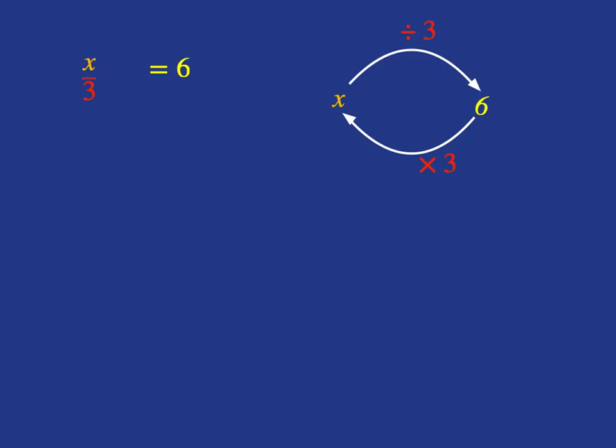What we do to one side of the equation, we must do to the other, so let's multiply both sides of the equation by 3. That will mean you'll get back to x on its own on this side, and 6 multiplied by 3 will give you 18, so x is 18 is the solution to the equation.